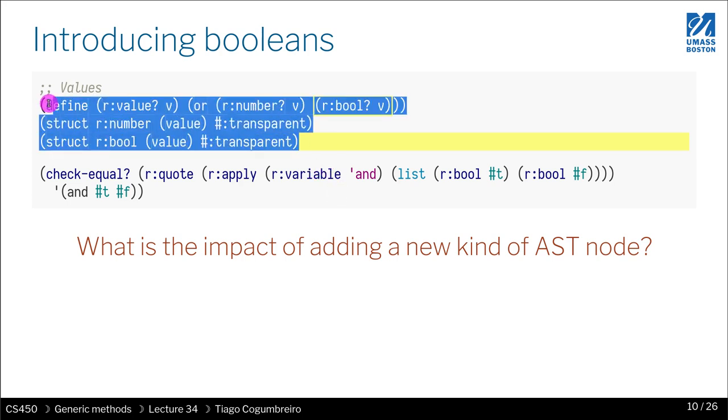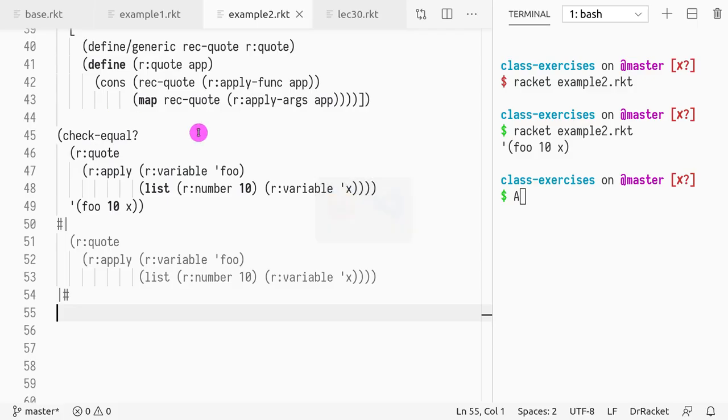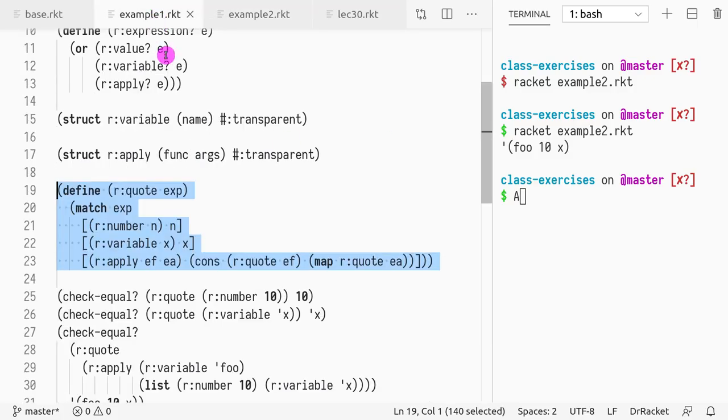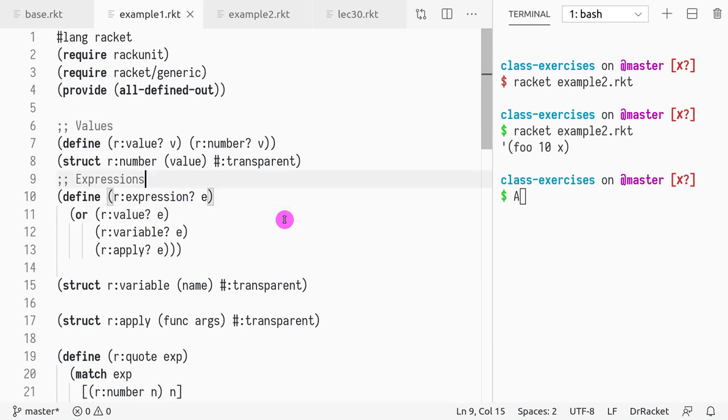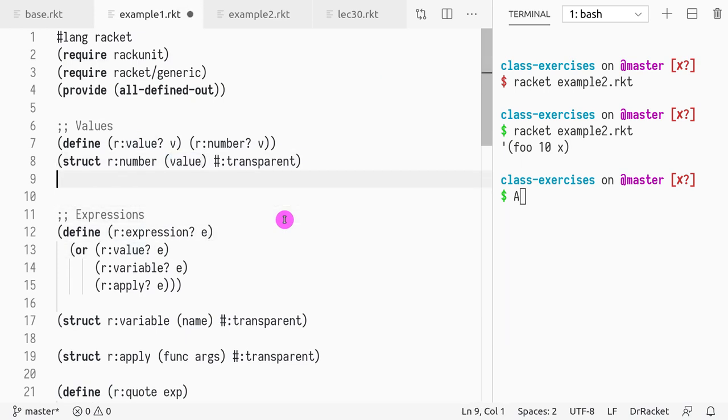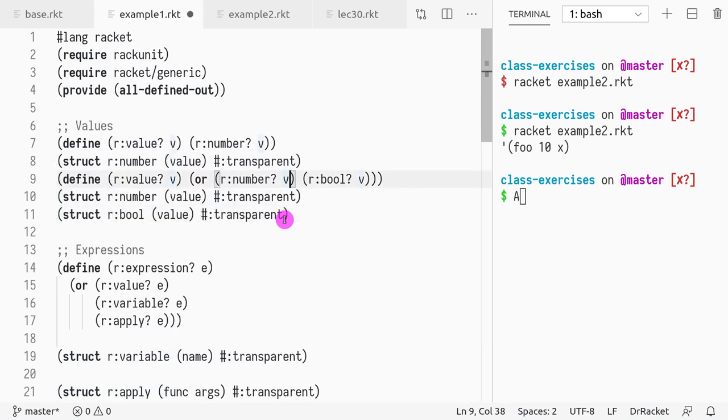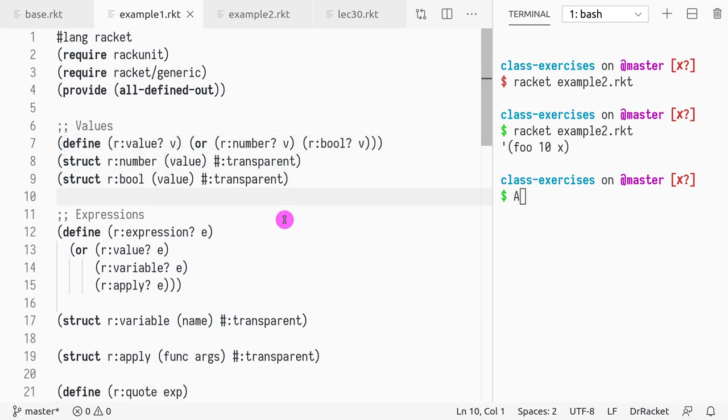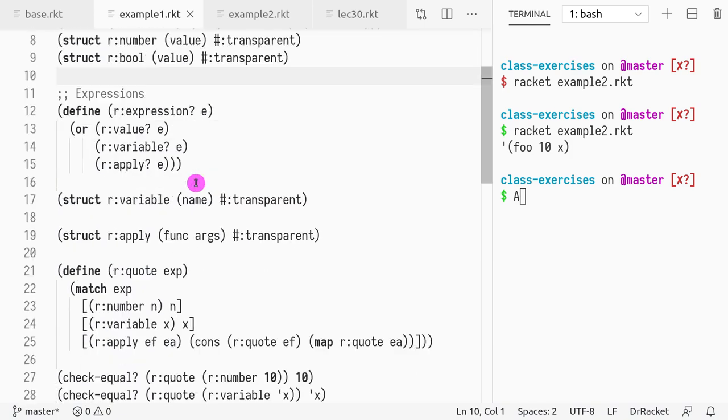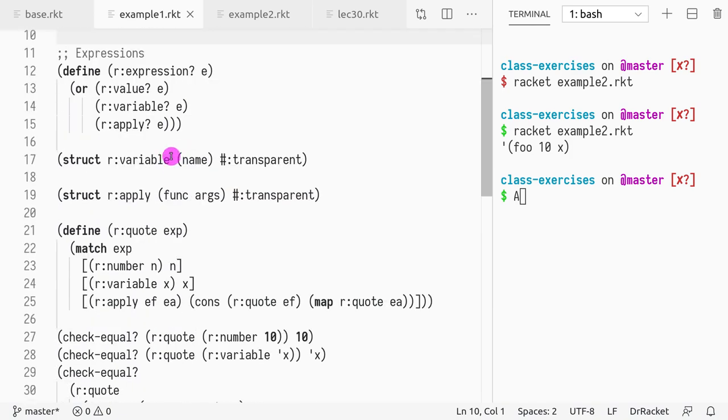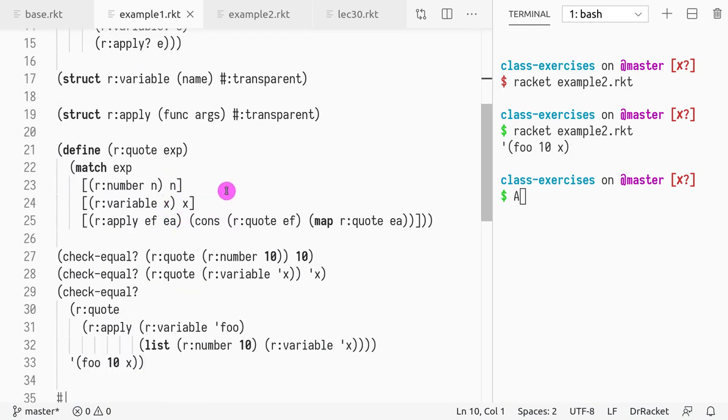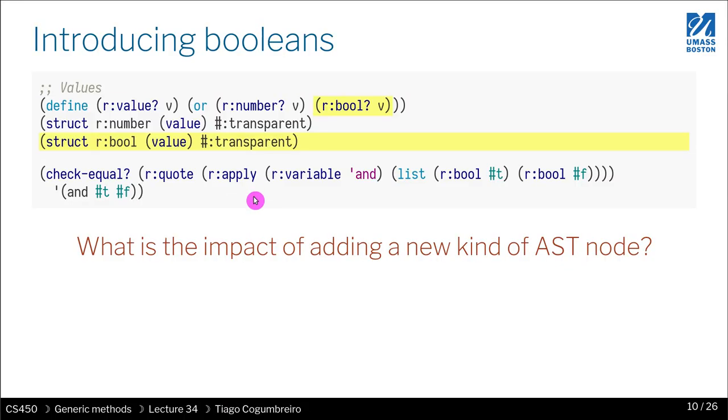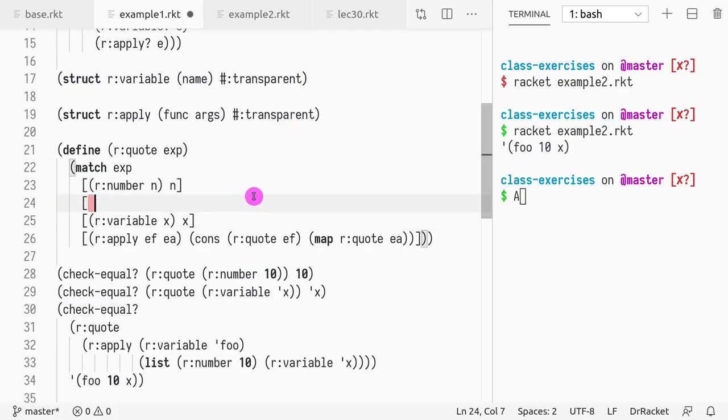Now I'll first update version 1 and then version 2. If we change, now I want to have booleans in values. So now I have numbers and values, expressions remain unchanged. I need to add a case for booleans. I do r-colon-bool-b, and I return b.